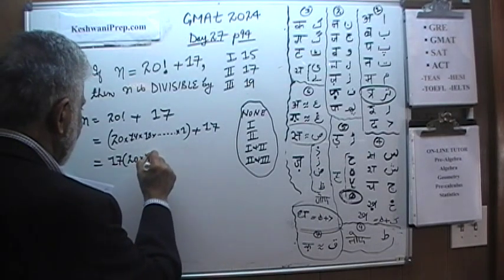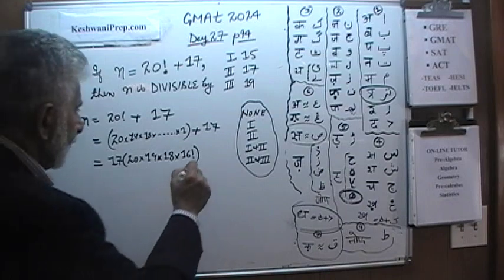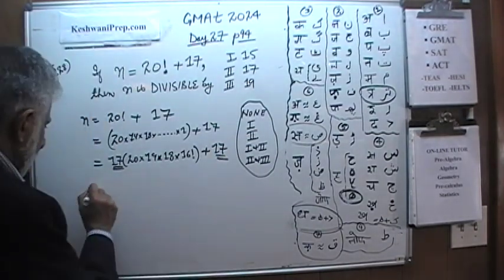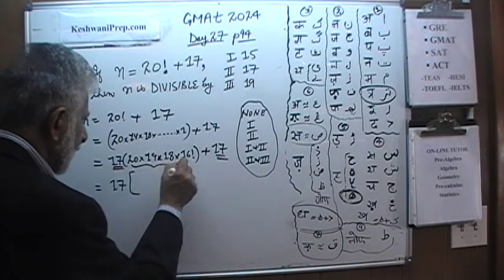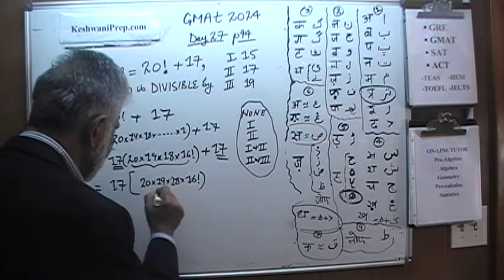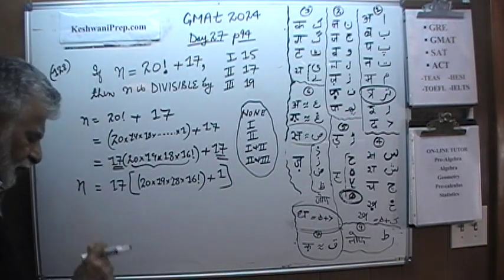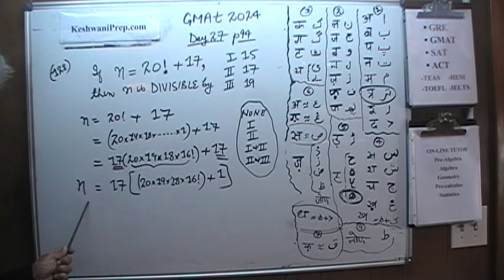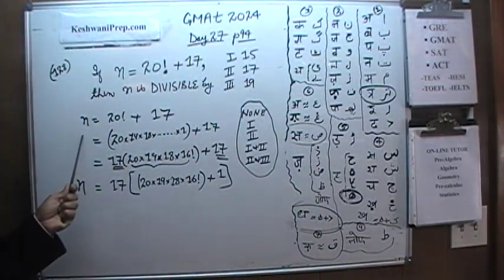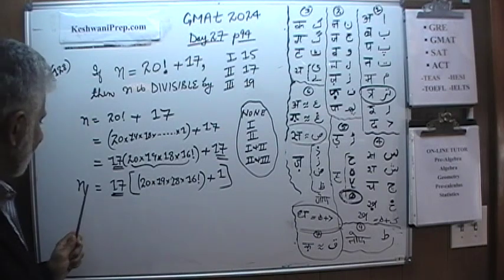20 times 19 times 18, we have taken out 17, times 16 factorial. And here we have plus 17. We have a 17 here and a 17 here. We can take out 17 common, and what we are left with is: 20 times 19 times 18 times 16 factorial, plus 1. And that is n. Therefore n, whatever its value is, is clearly a multiple of 17, which means n is divisible by 17.